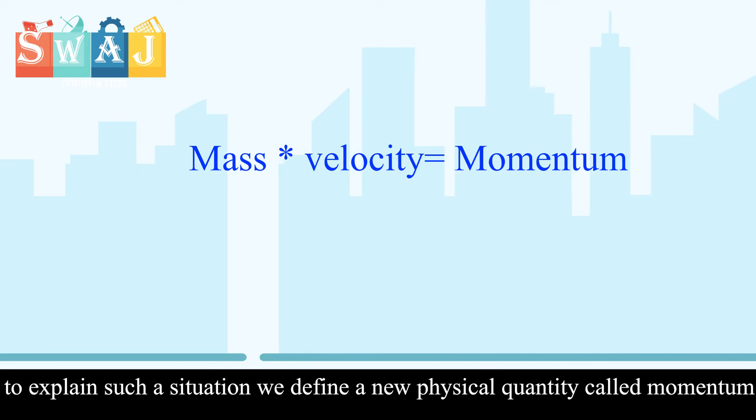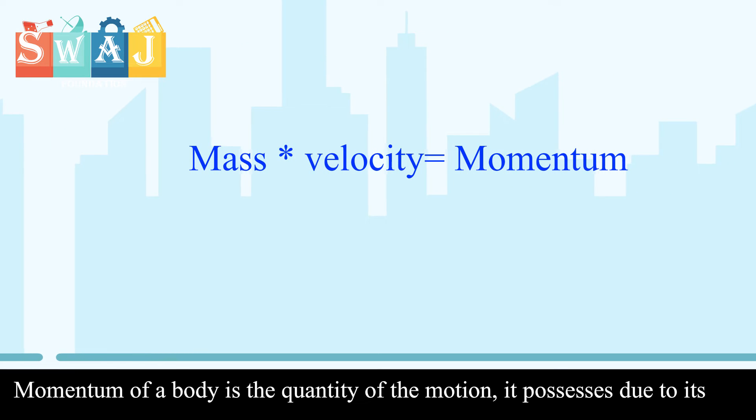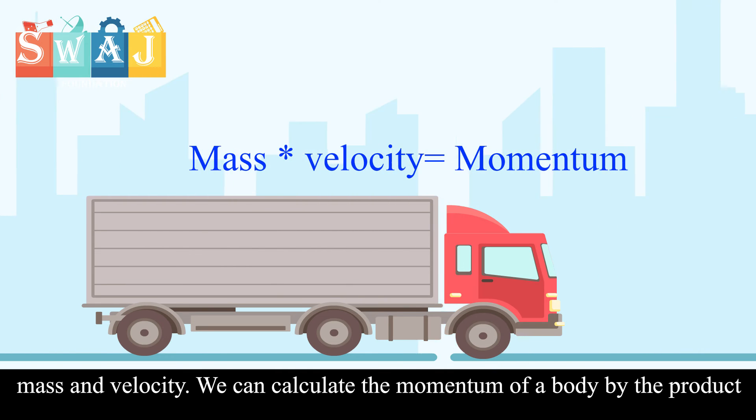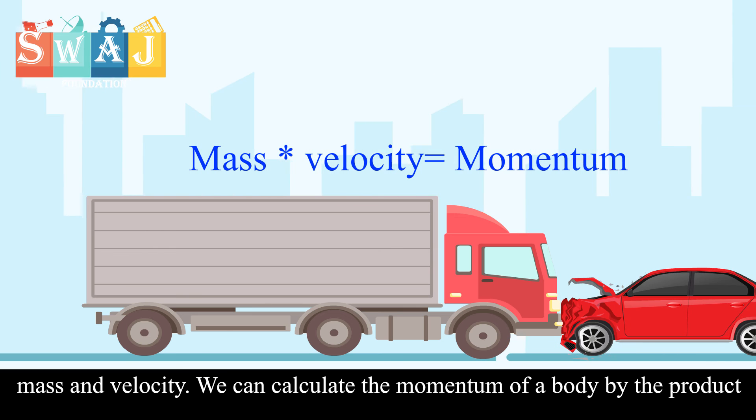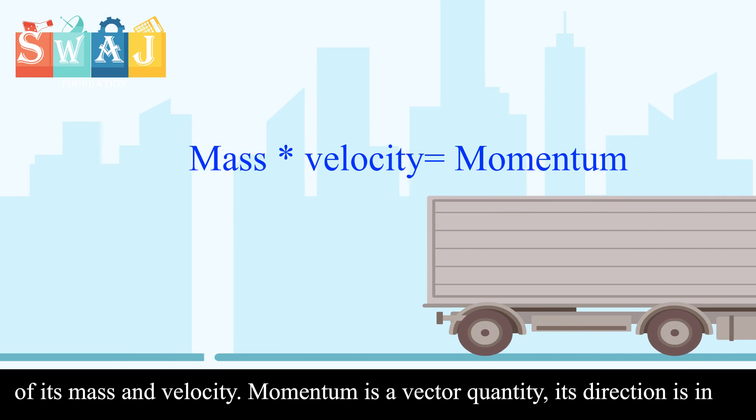We define a new physical quantity called momentum. Momentum of a body is the quantity of motion it possesses due to its mass and velocity. We can calculate the momentum of a body by the product of its mass and velocity.